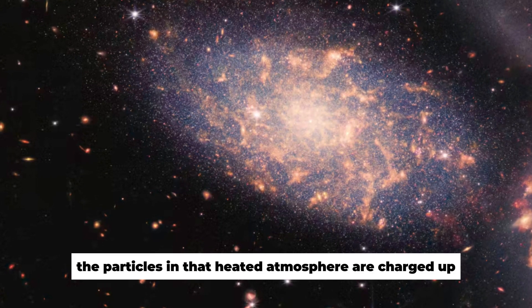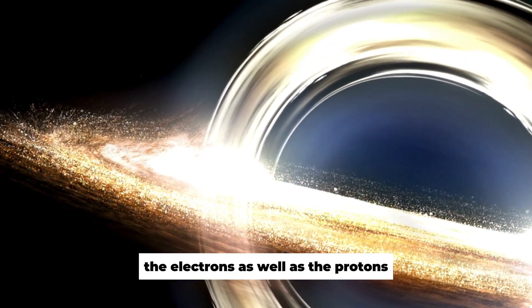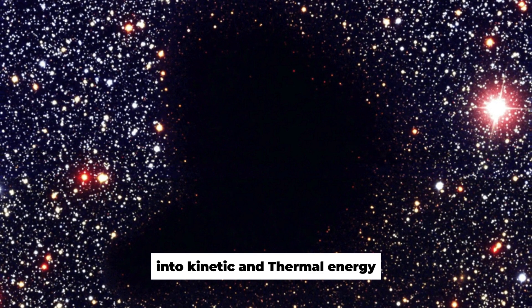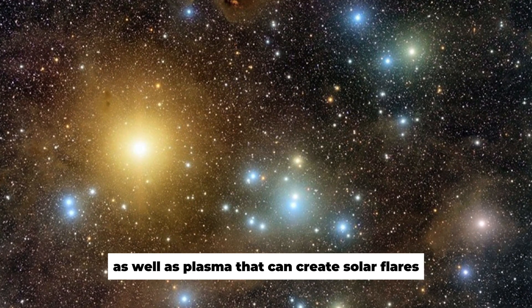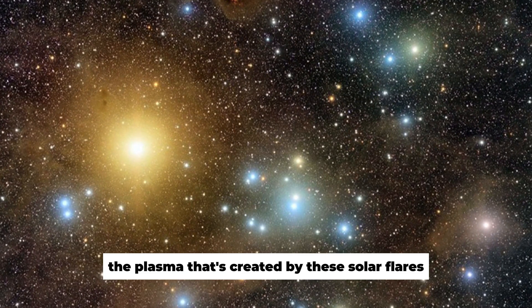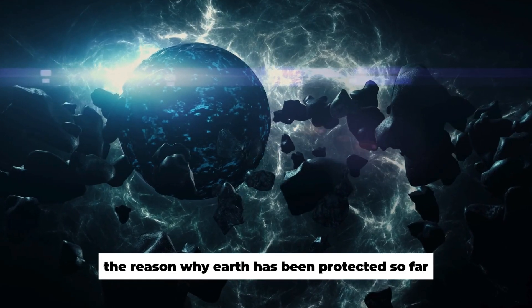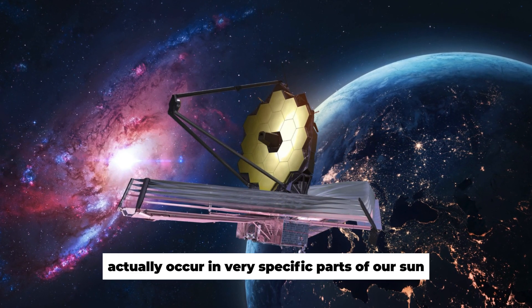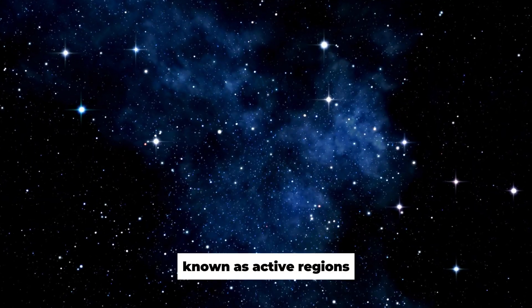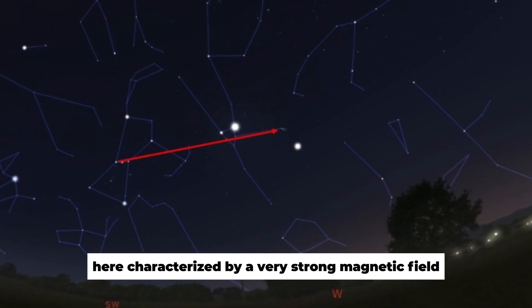Whenever that happens, the particles in that heated atmosphere are charged up. As the particles get charged, the electrons as well as the protons convert this magnetic energy into kinetic and thermal energy. The result is an extremely dangerous burst of X-rays, as well as plasma that can create solar flares. The plasma that's created by these solar flares has particles that carry so much energy that they are accelerated near to the speed of light. Besides that, the reason why Earth has been protected so far is because these flares don't occur in every region of our giant star. These flares actually occur in very specific parts of our sun, known as active regions, and are a temporary feature in the sun's atmosphere, characterized by a very strong magnetic field.